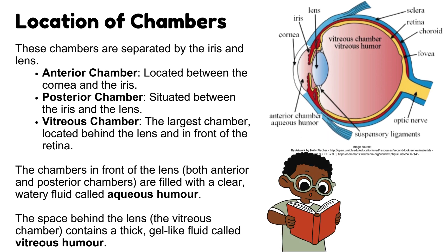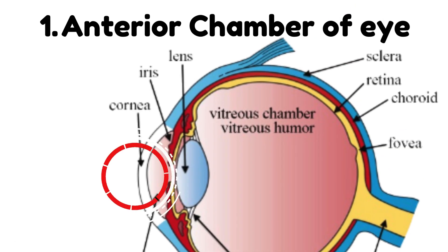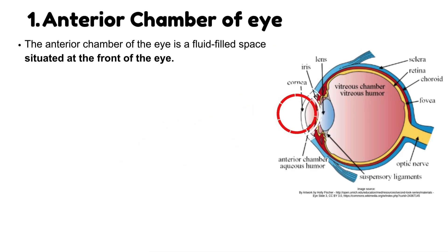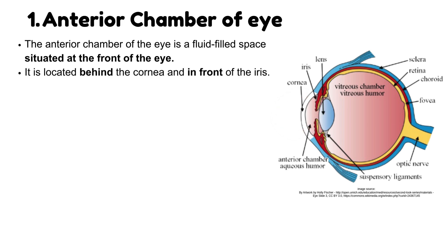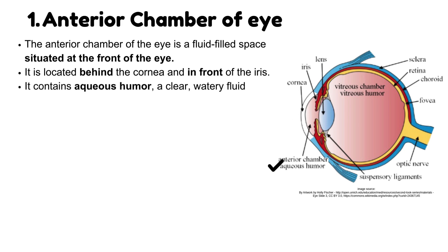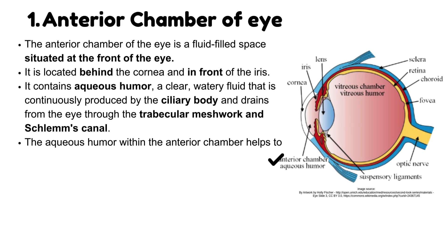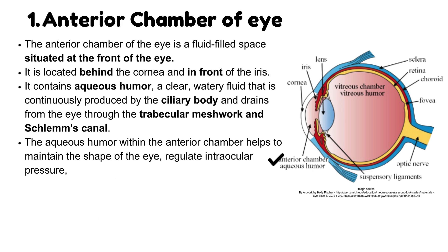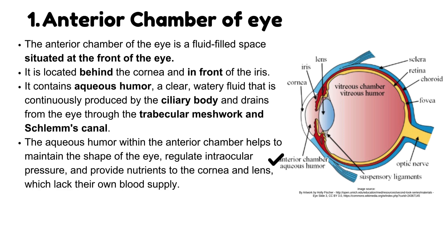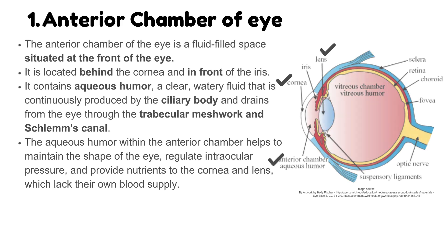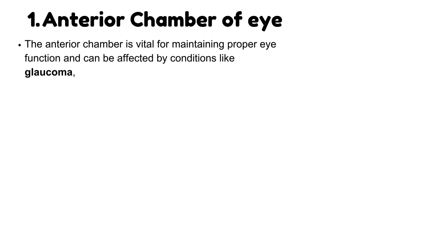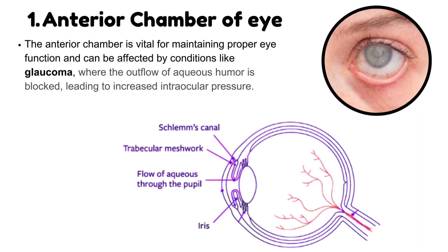Number 1: Anterior chamber of the eye. The anterior chamber is a fluid-filled space situated at the front of the eye, located behind the cornea and in front of the iris. It contains aqueous humor, a clear watery fluid that is continuously produced by the ciliary body and drains from the eye through the trabecular meshwork and Schlemm's canal. The aqueous humor helps to maintain the shape of the eye, regulate intraocular pressure, and provide nutrients to the cornea and lens, which lack their own blood supply. The anterior chamber can be affected by conditions like glaucoma, where outflow of aqueous humor is blocked, leading to increased intraocular pressure.